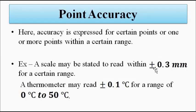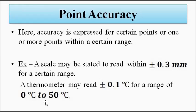For a range of 30 to 50 millimeters, whatever reading we get, there is a chance that the actual output is that reading plus or minus 0.3. Similarly, a thermometer can be specified to read plus or minus 0.1 degree Celsius for a range from 0 to 50 degrees Celsius. For example, when the output reading is 30°C, there is a chance it is actually 30.1°C or 29.9°C. That is what point accuracy means.